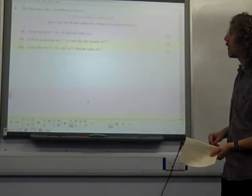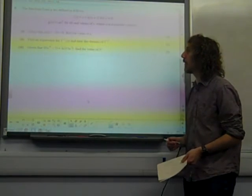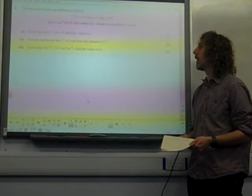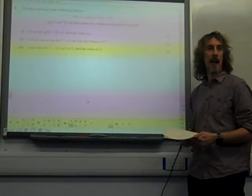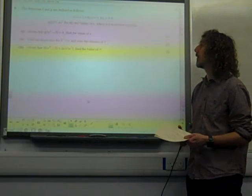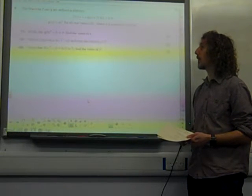Here we go, question 8. The functions f and g are defined as f of x is 2 plus ln of x plus 3, for x greater than 0. g of x is ax squared, for all real values of x, where a is a positive constant.